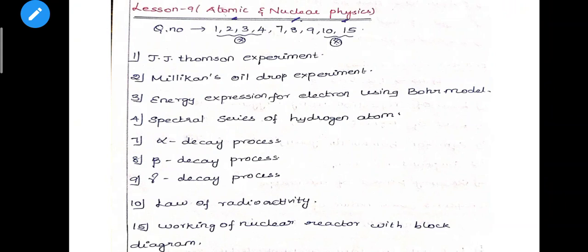Atomic and Nuclear Physics chapter. First, J.J. Thomson experiment - E by M, specific charge. Two important questions. J.J. Thomson and Millikan oil drop experiment. E by M ratio - very important question. Next, Bohr model energy expression - last year public exam question.